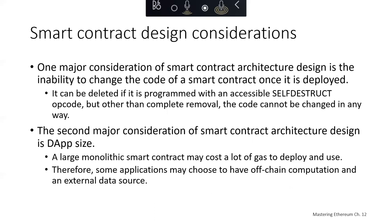One major consideration of smart contract architecture design is the immutability of smart contracts — the inability to change the code once it's deployed. You can delete a smart contract if it's programmed with an accessible self-destruct operation code, but other than complete removal, the code cannot be changed in any way once deployed. Another major consideration is dApp size: a large monolithic smart contract could cost a lot of gas to deploy and use. Some applications may choose to have off-chain computation and external data sources to keep their smart contract size and corresponding gas costs small. However, having the core business logic depend on external data means users will have to trust those external resources.